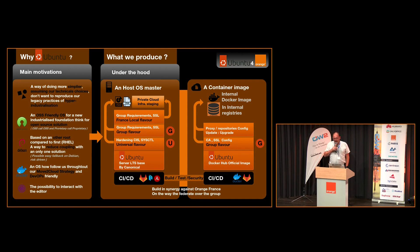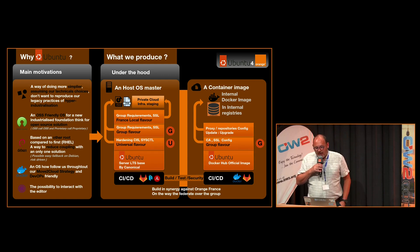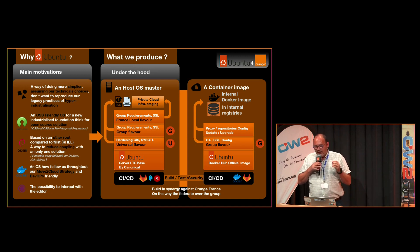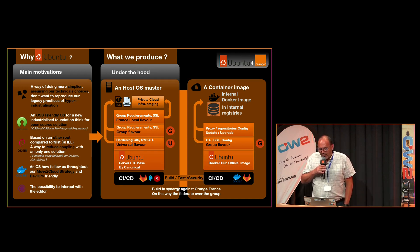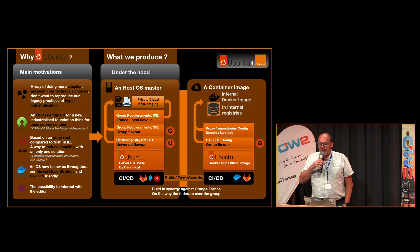Why Ubuntu? What are our main motivations? First, we want to do simpler. Historically in Orange France, we have built industrialization of our operating system, but we want to not reproduce our hyper-industrialization complexities. Secondly, we need to introduce an operating system to host and build with open source software. Open source software calls open source software, and proprietary software calls proprietary software. So we need to have an open source community edition operating system.